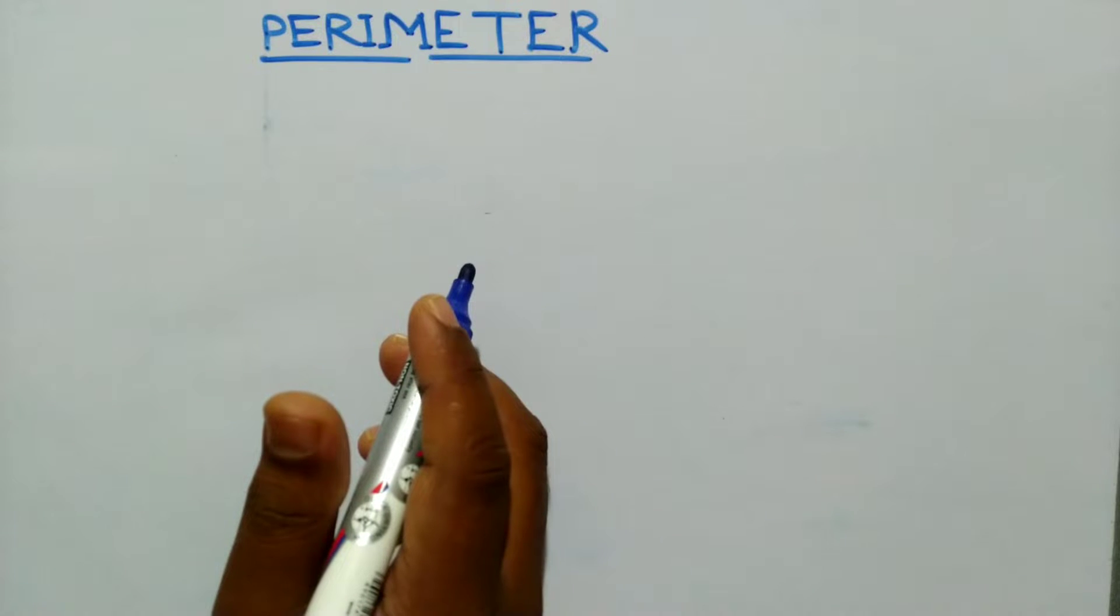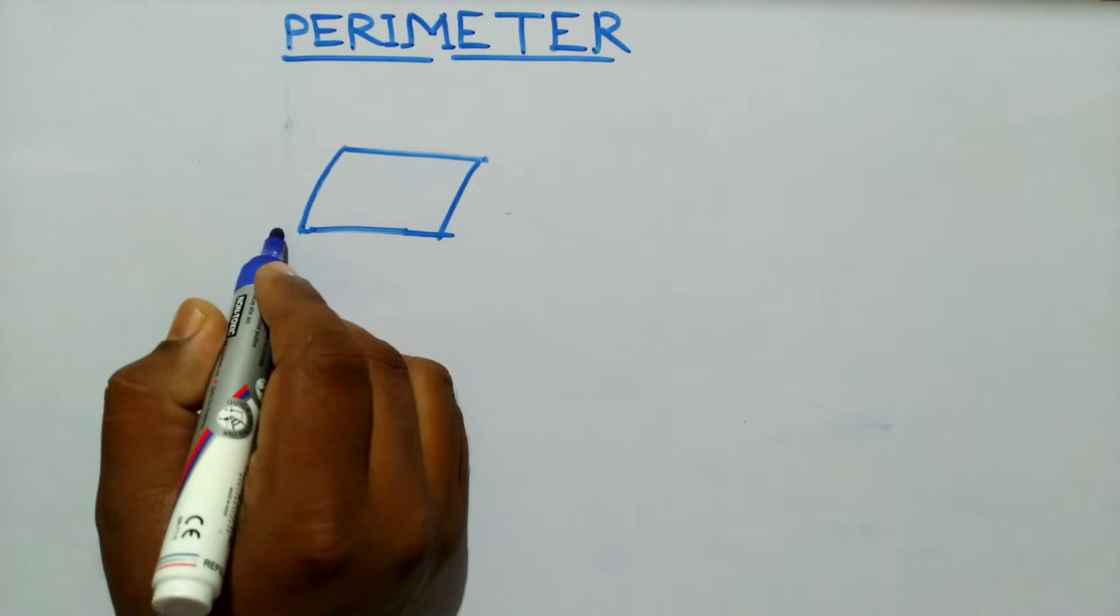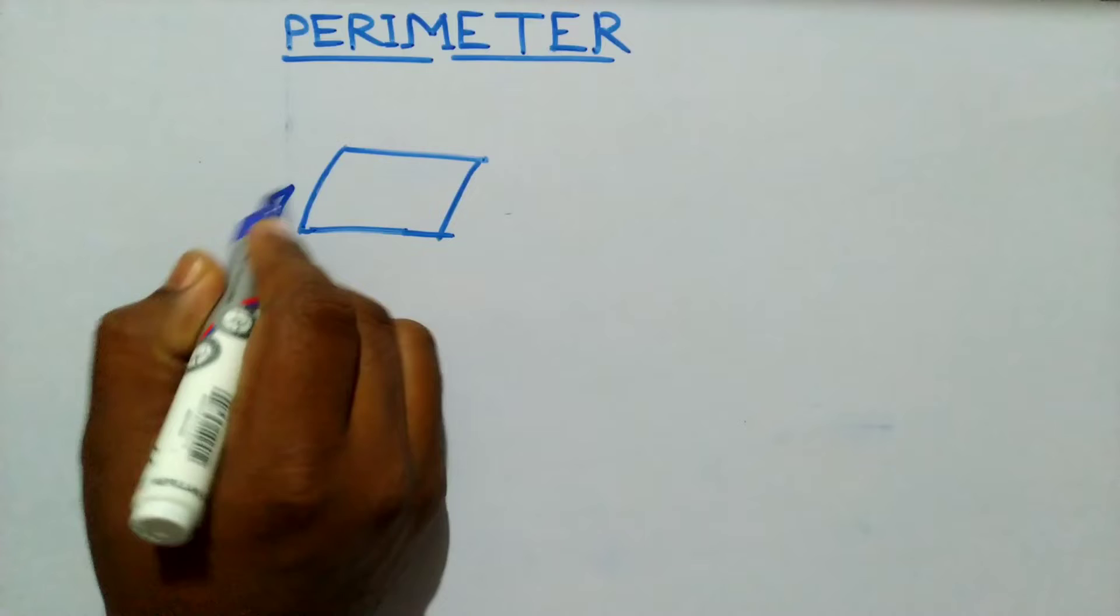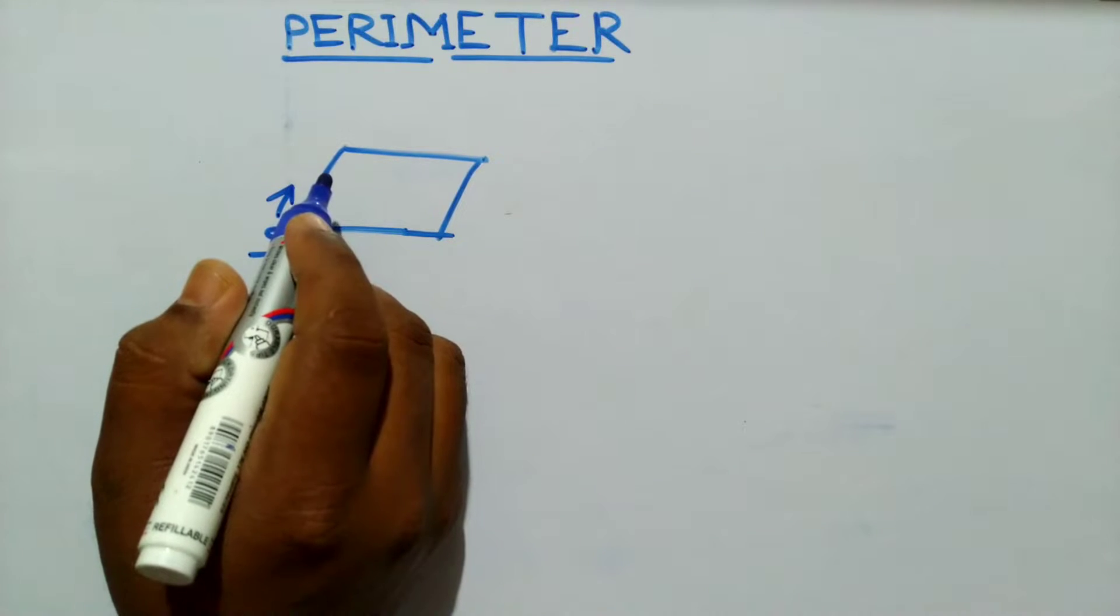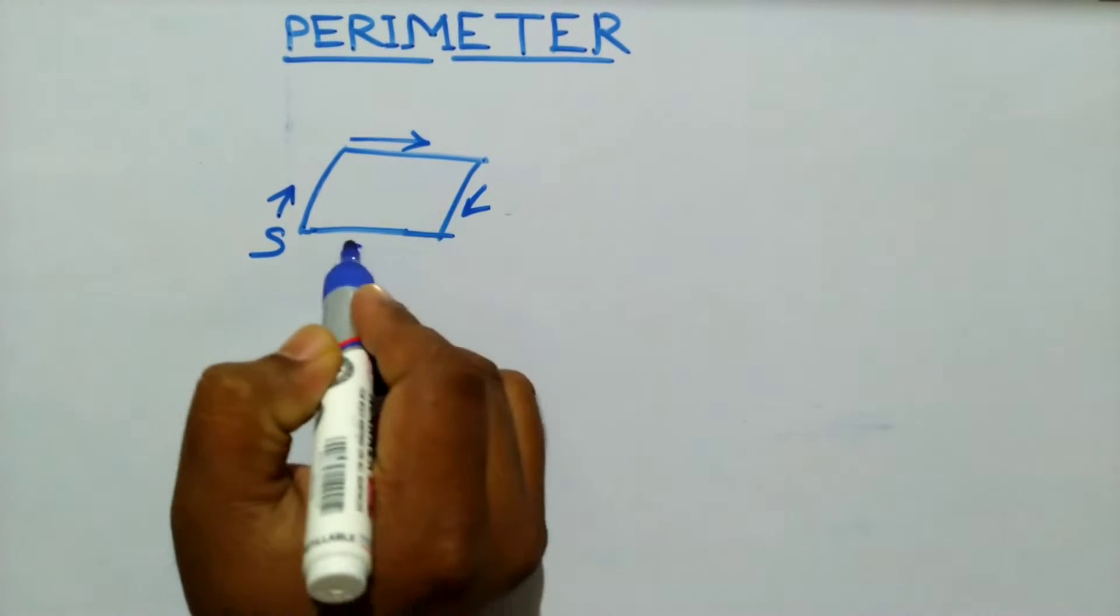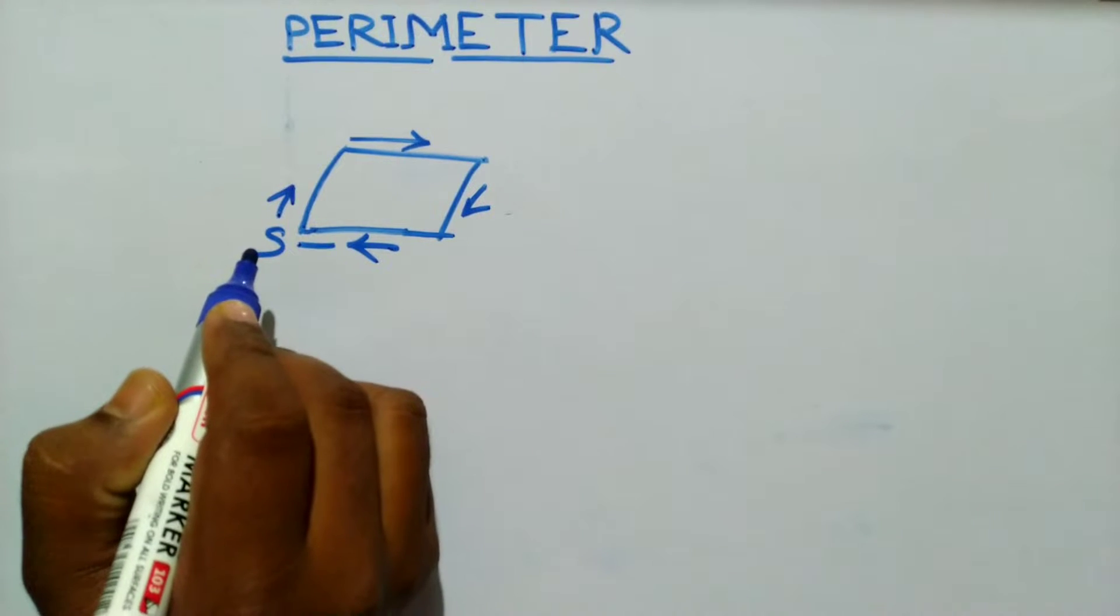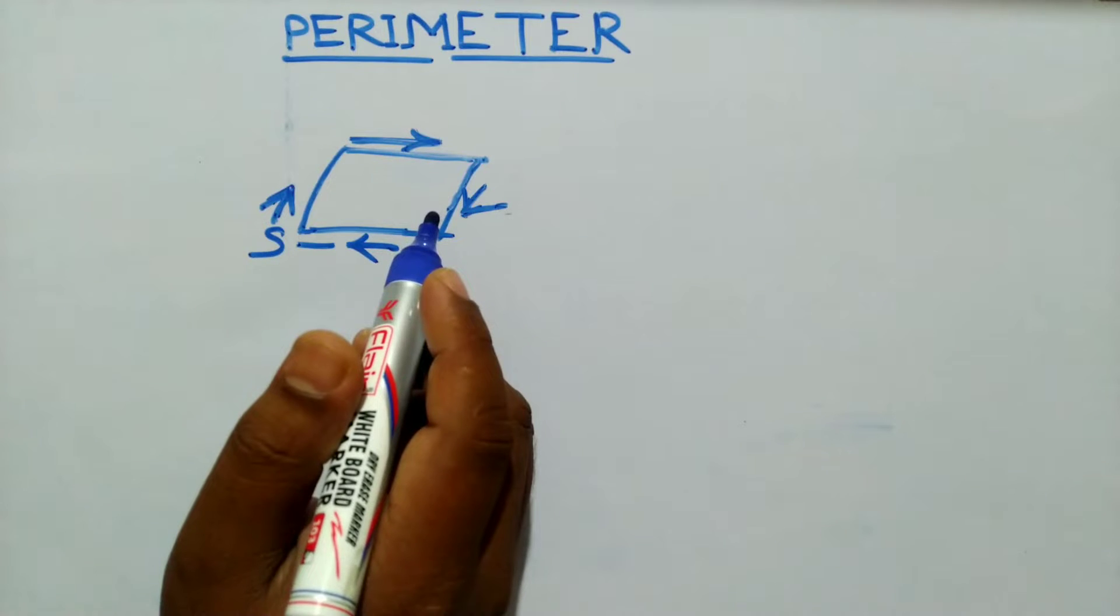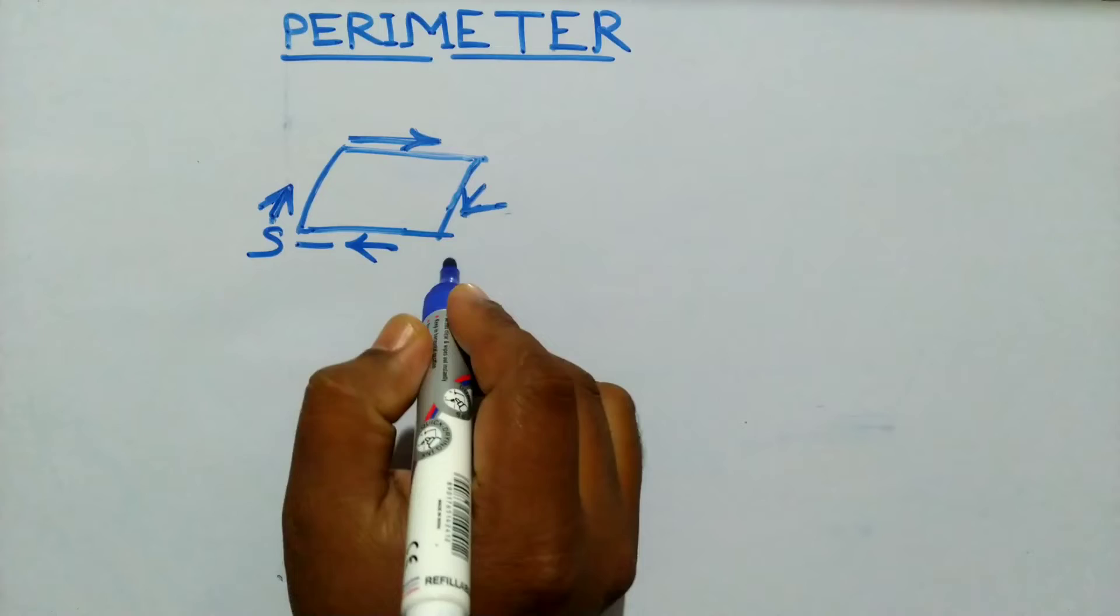Hello everyone, today's topic is perimeter. Draw a figure and name the points. If I start from the point S in this direction and move along the line segment, then I again reach the point S. I made a complete round of the shape. The distance covered is equal to the length. This distance is called the perimeter.